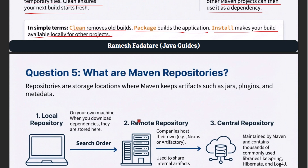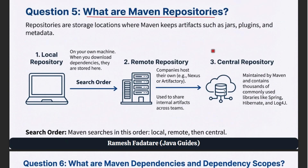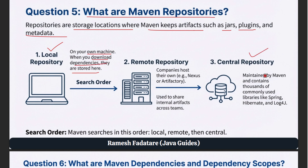Question 5: What are Maven repositories? Repositories are storage locations where Maven keeps artifacts such as JARs, plugins, and metadata. There are three types: first, the local repository on your own machine where downloaded dependencies are stored; second, the central repository maintained by Maven, which contains thousands of commonly used libraries like Spring, Hibernate, and Log4j; and third, the remote repository — companies host their own remote repositories such as Nexus or Artifactory to share internal artifacts across teams. Maven searches in this order: local, remote, then central.